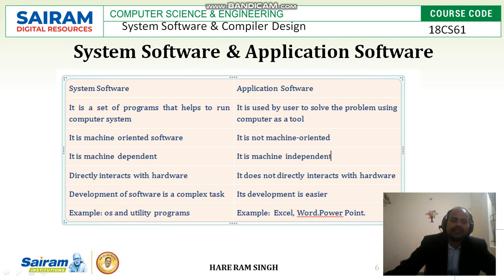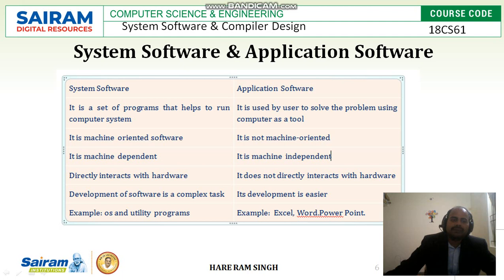In system software, development is a complex task — a very large number of program lines are required. But compared to that, application software is much easier and requires far fewer lines of code. Examples of system software are operating system, utility programs, debugger, linker, loader, assembler, and compilers. Examples of application software are Excel, Word, PowerPoint, mobile applications, and desktop applications.